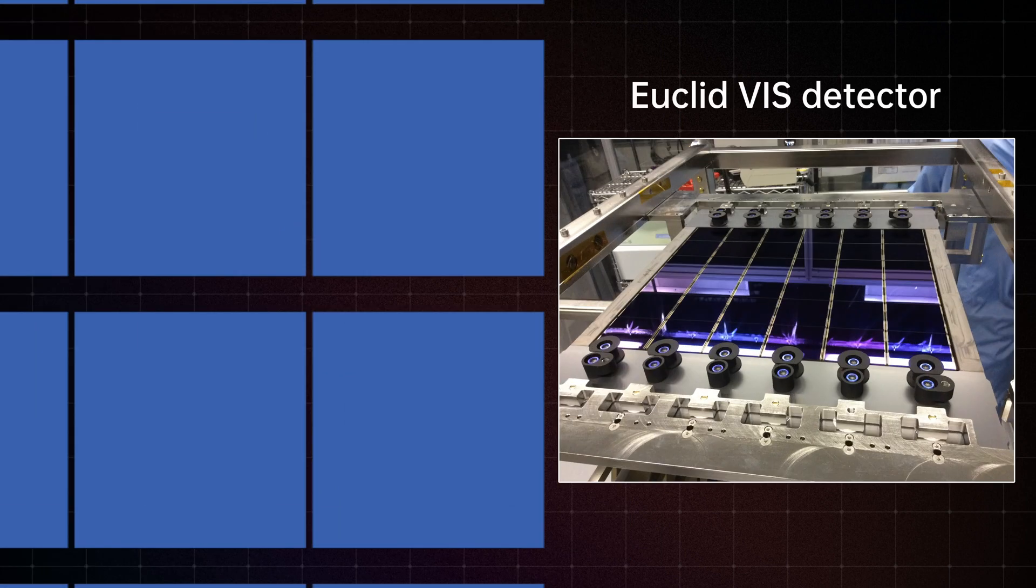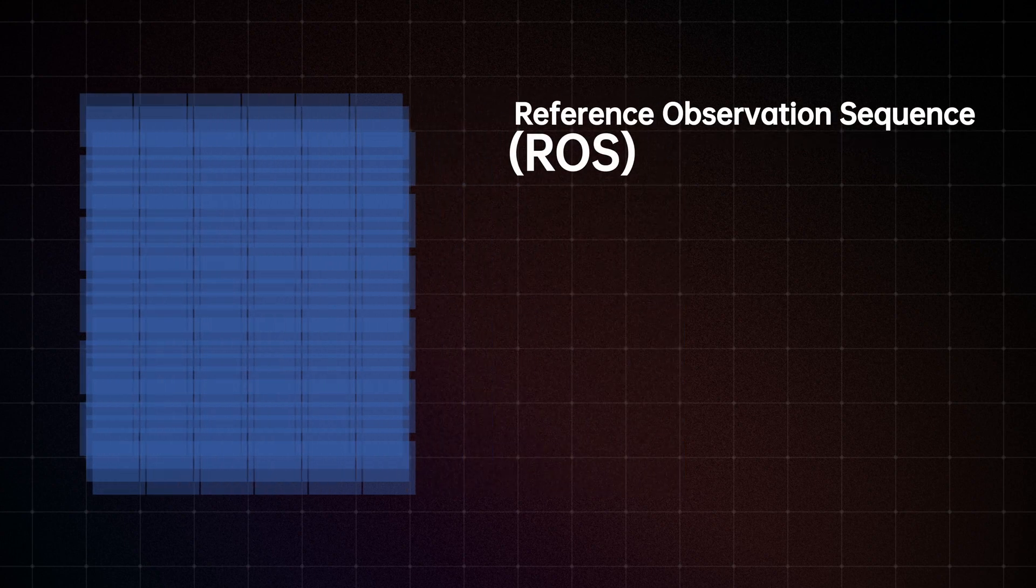You might notice gaps between CCDs. To deal with this, what we do for the observation is we add a little shift between each shot we take of the sky. This shift on each pointing is referred to as dithering in astronomy. The image capture procedure is known as the reference observation sequence, or ROSE.